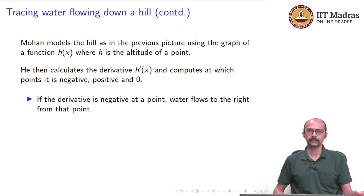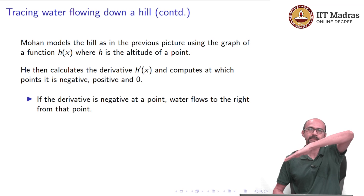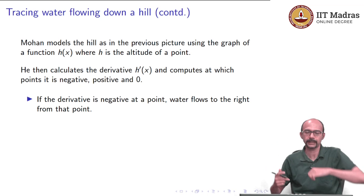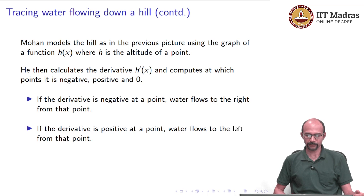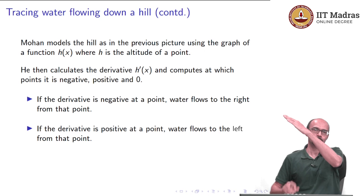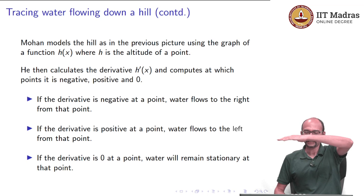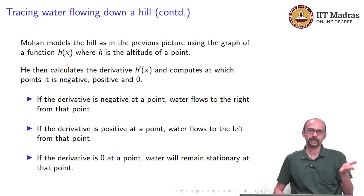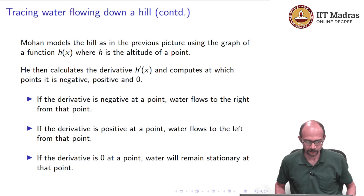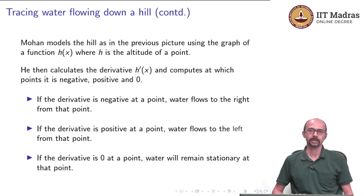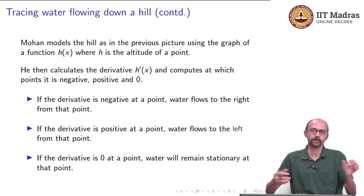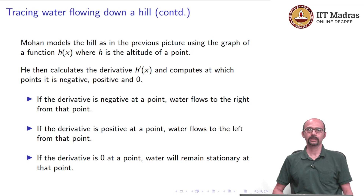If the derivative is negative, the tangent line slopes downward and it flows to the right. If the derivative is positive, the tangent line slopes upward and water flows to the left. If the derivative is zero, the tangent line is flat and water remains stationary — exactly what happens at the tip of the mountain. Mohan draws a picture similar to this cross section for that specific hill to understand how water is flowing down.